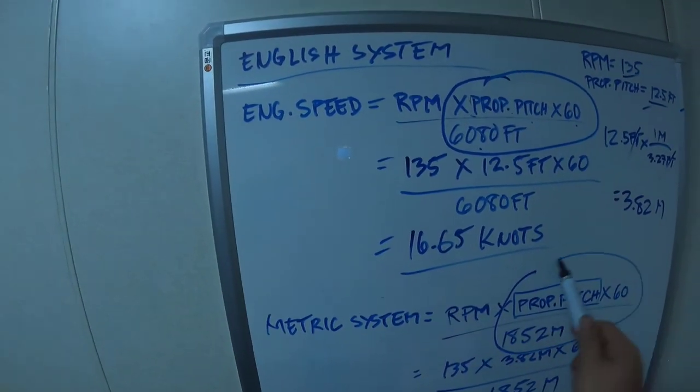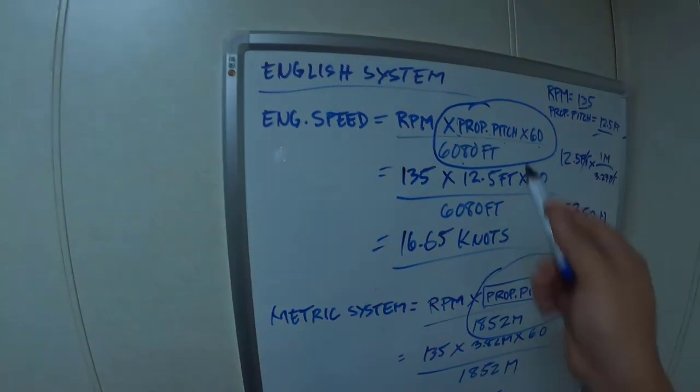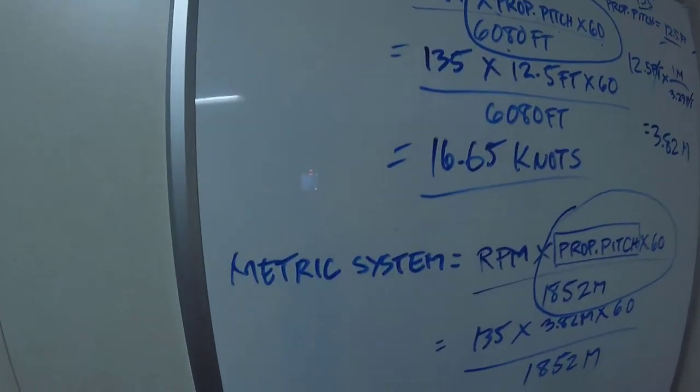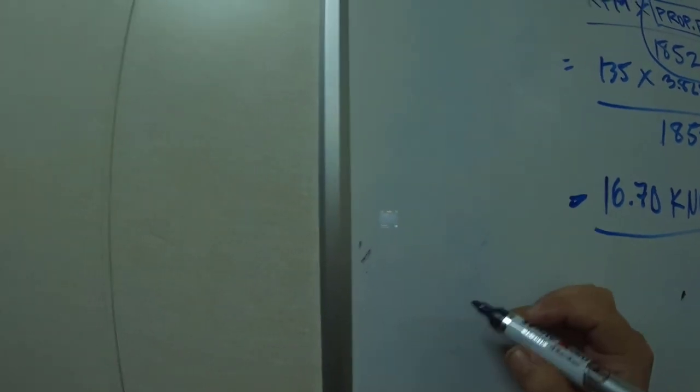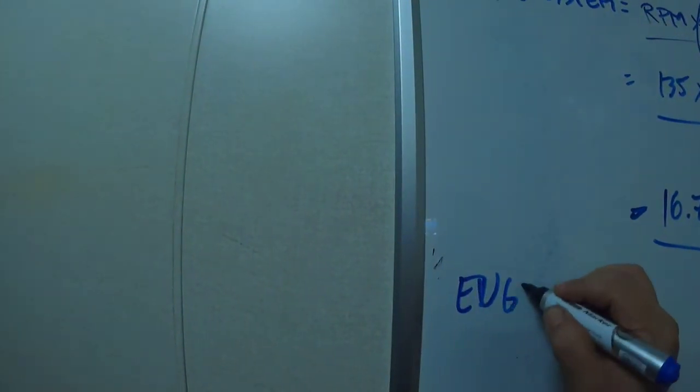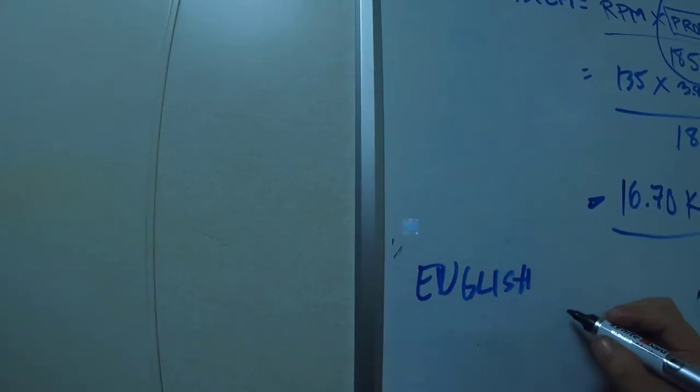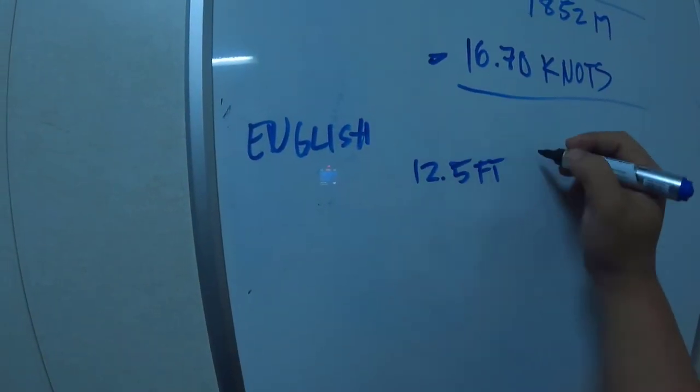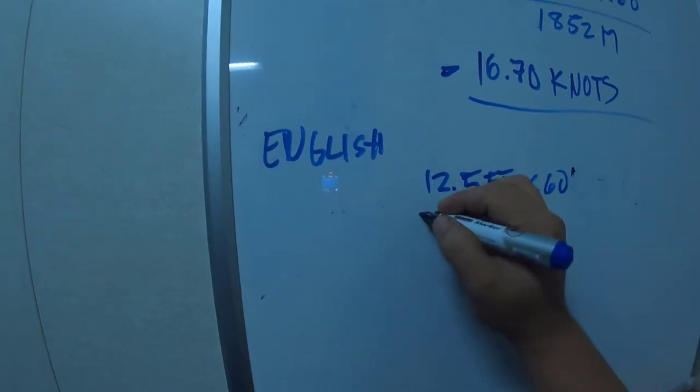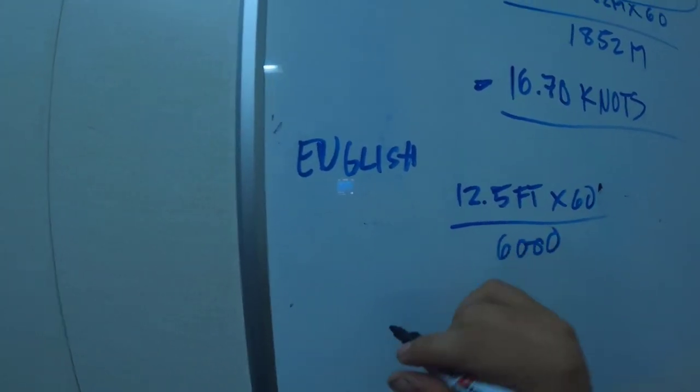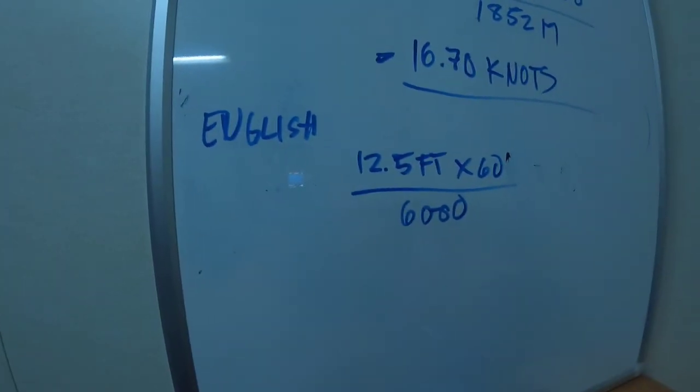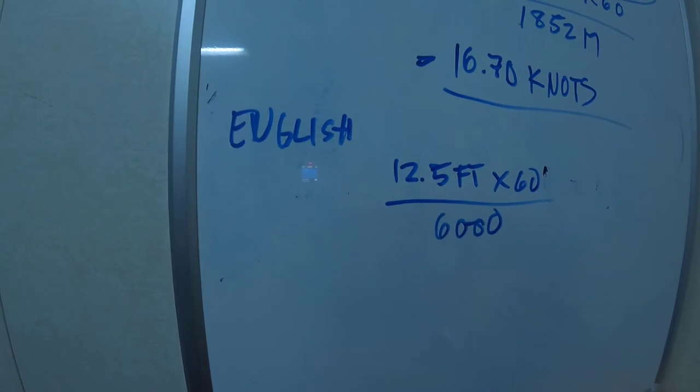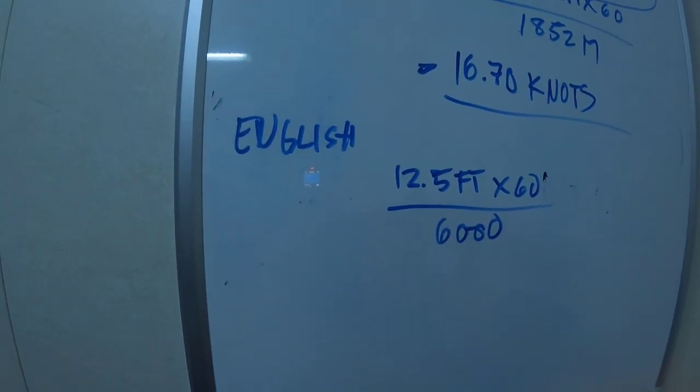It's the same for both metric system and English system. Let me prove they're the same. In the English system, our propeller pitch is 12.5 feet times 60 divided by 6080, which equals 0.12335.